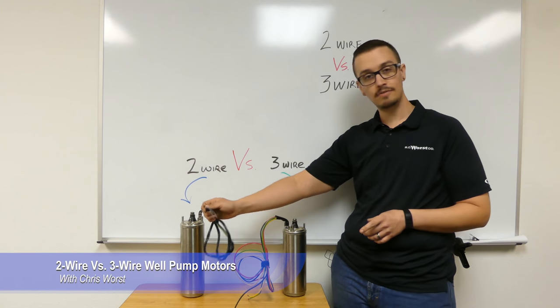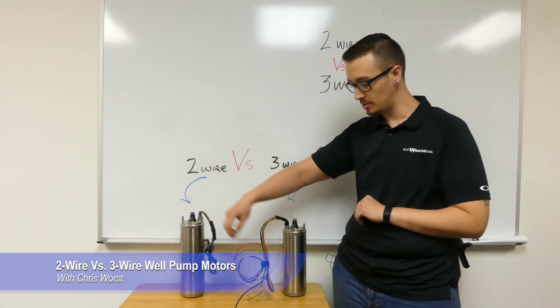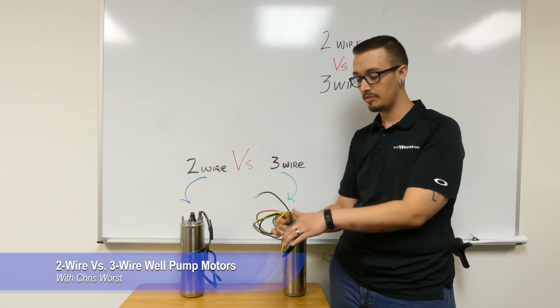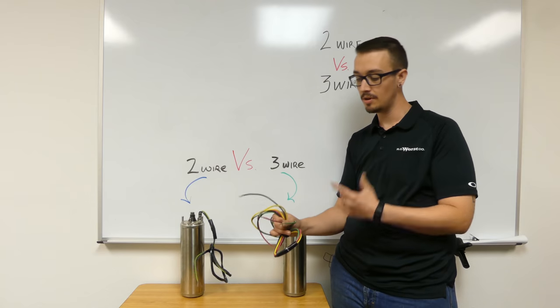First up, two wire motors have two wires plus a ground, but we don't count that. Three wire motors have three wires plus a ground. Again, we don't count that.